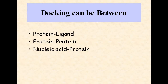Docking can occur between protein and ligand, protein and protein, and nucleic acid and protein. Among all of these, protein-ligand docking is the most important type, used to predict the position and orientation of the ligand when it is bound to a protein receptor or enzyme.